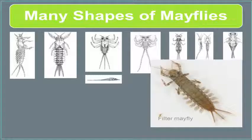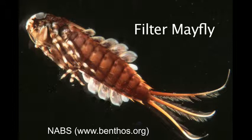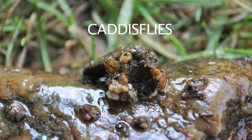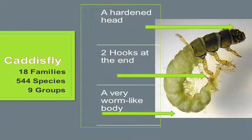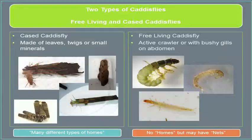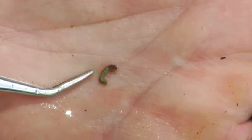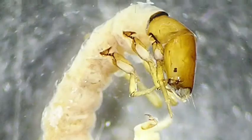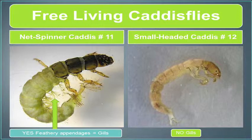Here are some other friends from the mayfly family — here we have the spiny turtle, and here we have a burrowing mayfly. Moving on to caddisflies: we've taken 18 families, 544 different species, and worked them down into nine different groups. They're less likely to be confused with mayflies and stoneflies because they're more wormy in stature. There are two basic kinds: free-living caddisflies and cased caddisflies. Cased caddisflies build a variety of different types of homes that they live in, whereas free-living caddisflies do not.